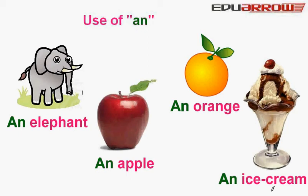An ice cream. The beginning letter of ice cream, I, is a vowel. So we add 'an' before ice cream.